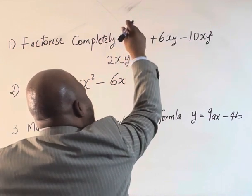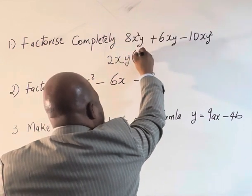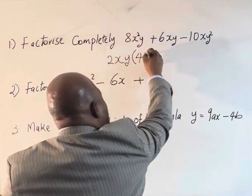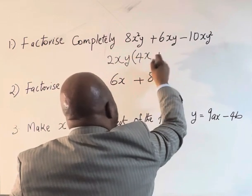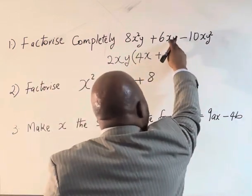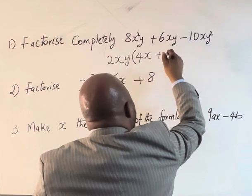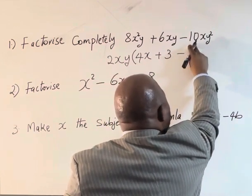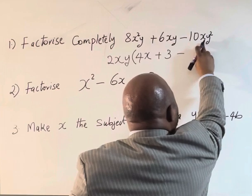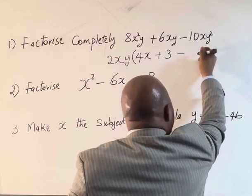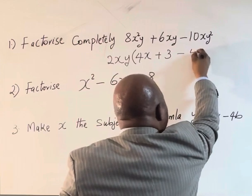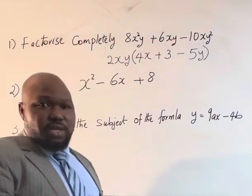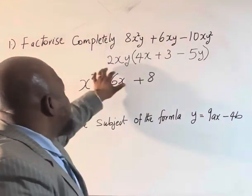Two into eight, that is four, y into y goes out, x into x squared x, plus two x y into six x y will be three, two x y into minus 10 y minus 10 x y squared will be x will go, so we have five y. Is there anything we can factorize? No, so this expression has been completely factorized now.